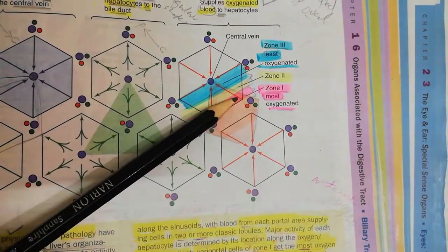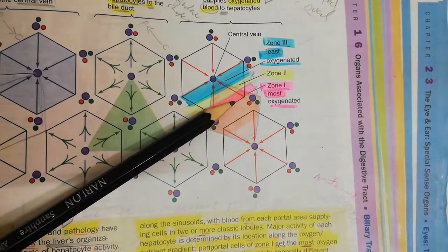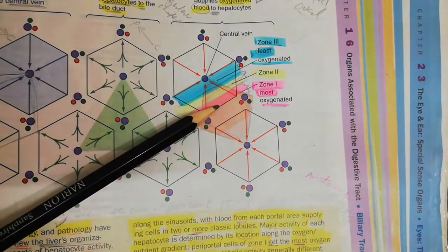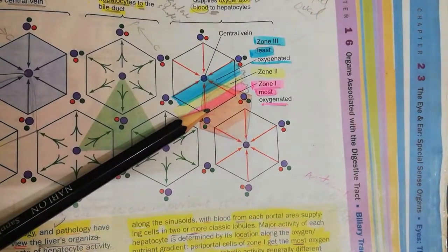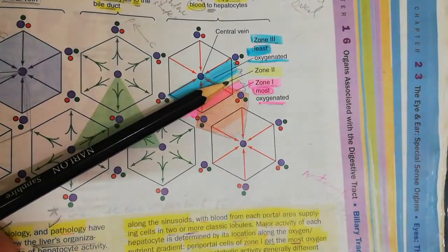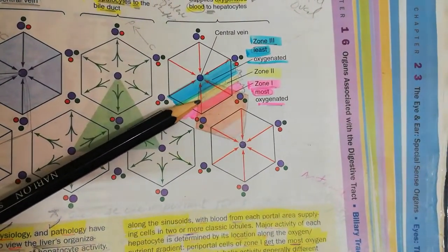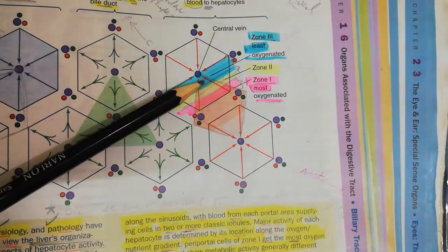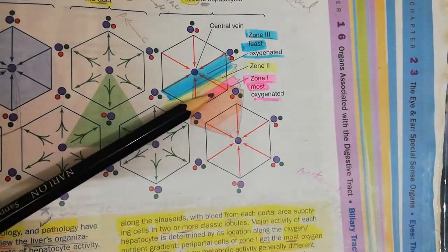For study purposes, you can see the classical liver lobule is showing this initial zone. This zone is called zone 1, which I have marked in pink color. Then next to it in yellow color you can see zone 2, and then there is zone 3 which is very close to the central vein.